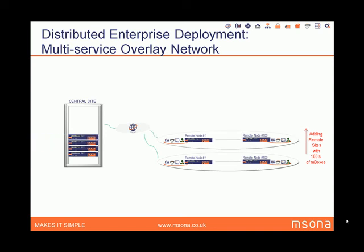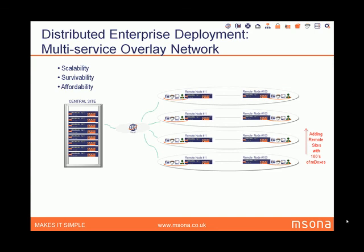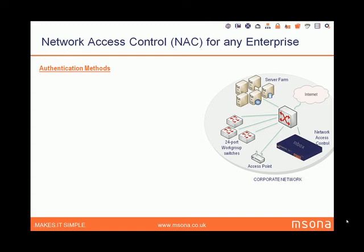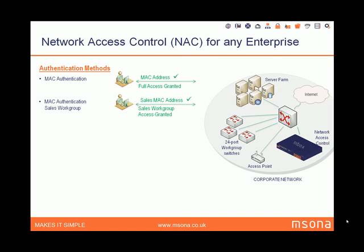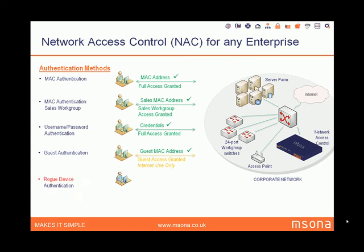The overlay network enables sharing of resources across the enterprise, free internal telephone calls, e-learning and many other services. The solution is scalable, robust and economical. Finally, the MBOX can act as a pure network access control appliance for discovering network connections and authenticating users, machines and devices wishing to access the local area network. Any rogue device is denied access and quarantined so it can't harm the network.